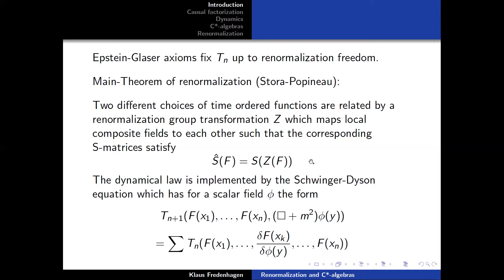One can also formulate the dynamical law in terms of these series. This is the well-known Schwinger-Dyson equation, written here for the example of a scalar field. The (n+1)-th order time-ordered product inserts for one entry the Klein-Gordon operator (□ + m²) applied to φ, while on the other side one takes the functional derivative of the functional F with respect to the underlying field.